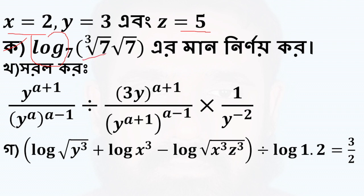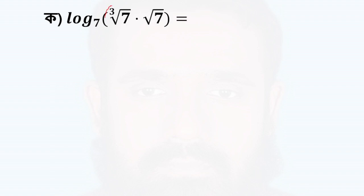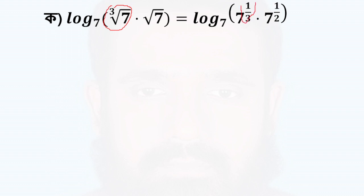The geometric mean is 7. The geometric mean is 7, and the geometric mean is 7. So the geometric mean is 1 by 3. This is geometric mean is 7. This is 1 by 3. The geometric mean is 1 by 3. So the geometric mean is 7.